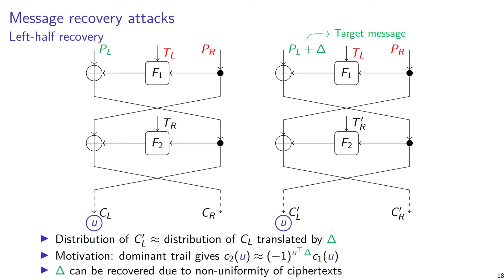We do the same thing for the target message — the secret message we're trying to recover — which can always be written as the known plaintext PL plus an unknown difference delta. We also estimate the distribution of the left half of the ciphertext. The crucial observation is that this distribution is approximately the same as the distribution for the known message, except translated by the difference delta. This is approximately true under the piling-up assumption, or equivalently, that the trail I've given is dominant.